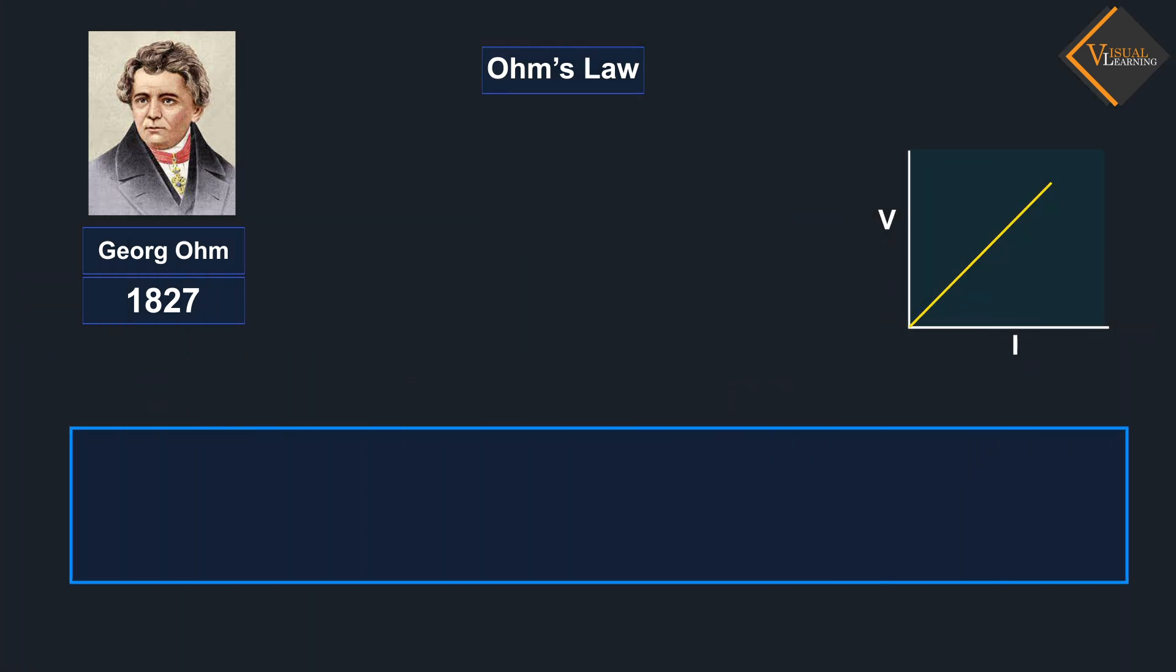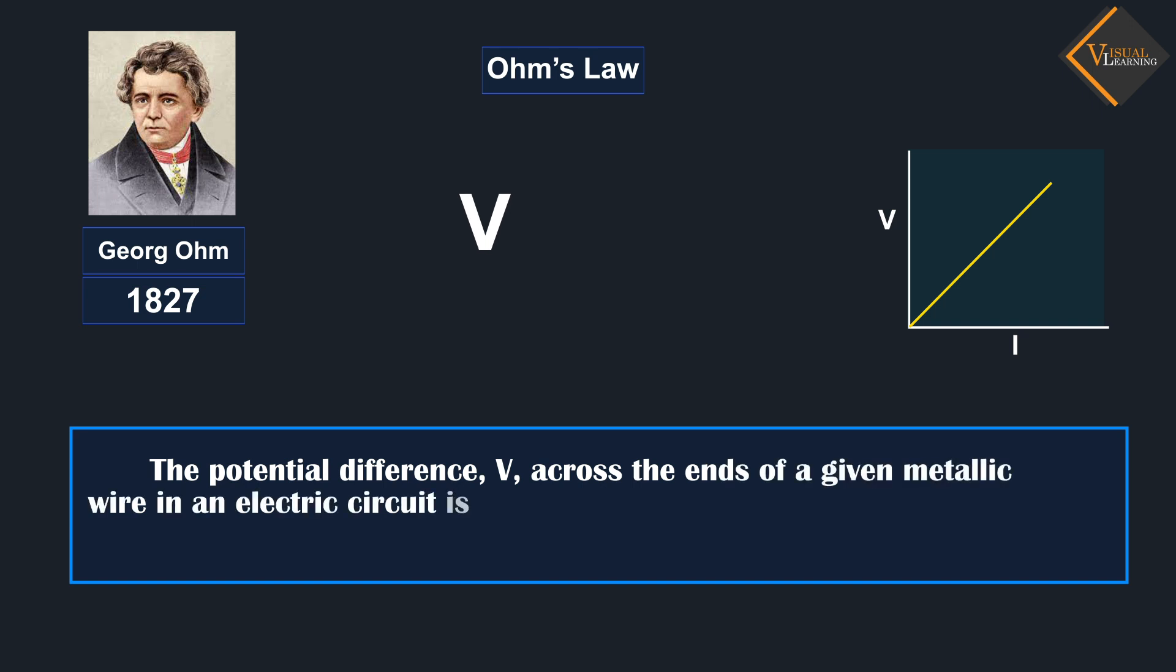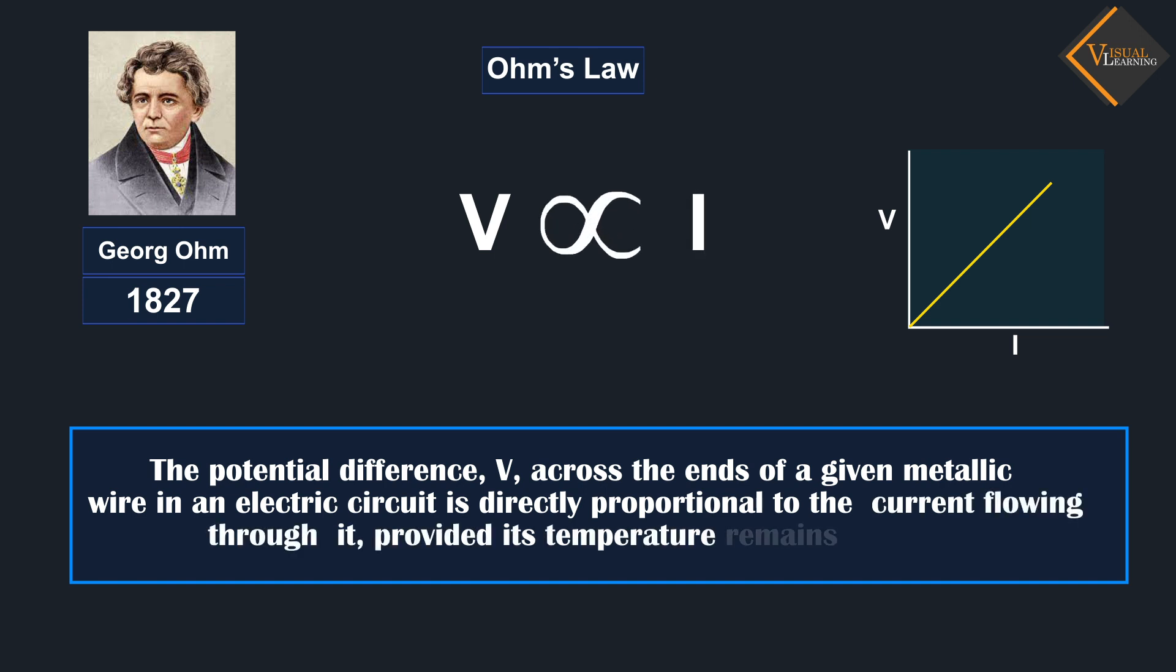According to Ohm's law, the potential difference, V, across the ends of a given metallic wire in an electric circuit is directly proportional to the current flowing through it, provided its temperature remains the same.